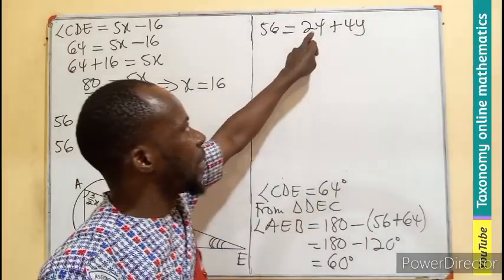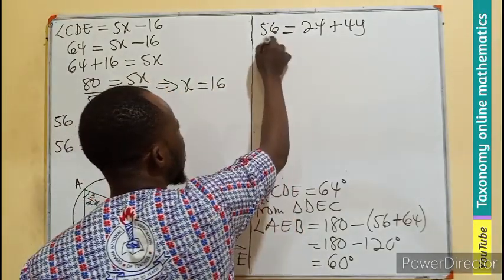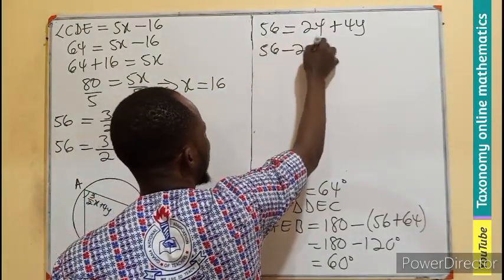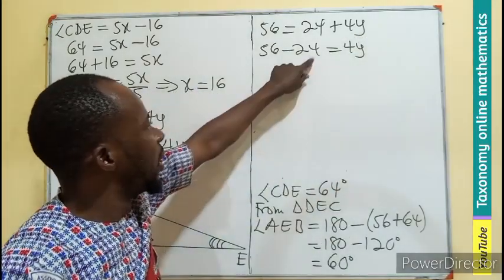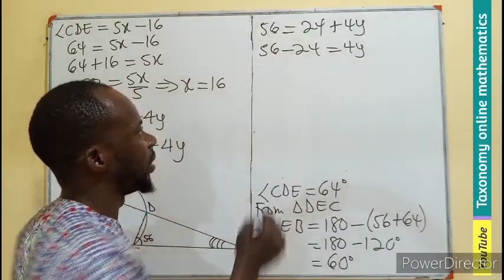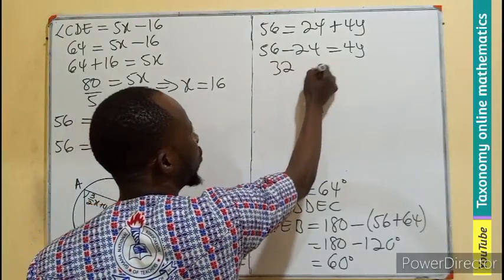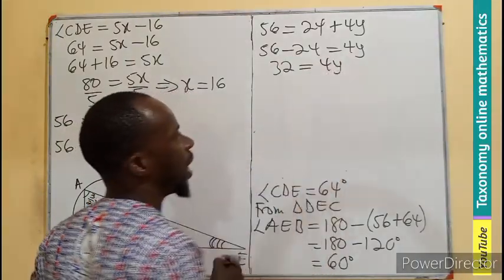What do I do? Subtract 24 from both sides of the equation. So 56 minus 24 equals to 4y. I believe this from here will be 2, this will be 3. So 32 equals to 4y.